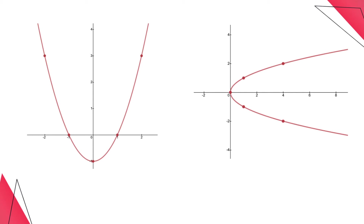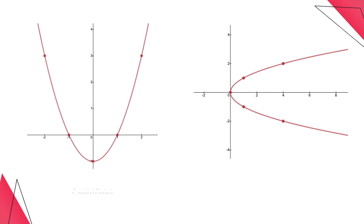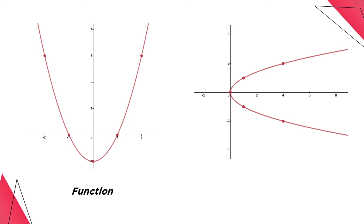For the first graph, if you draw a line passing through the graph, it only hits the graph once. Thus, the graph represents a function. However, for the second graph, if you draw a vertical line, the line hits the graph twice. Thus, it is not a function.